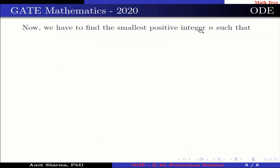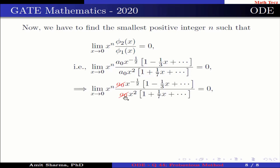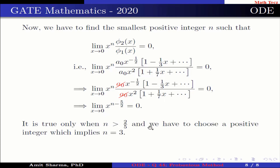Now we find the smallest positive integer n such that lim(x→0) x^n · φ2(x)/φ1(x) = 0. Substituting, this becomes lim(x→0) x^n · [a₀ x^(−1/2)(1 − x/3 + …)] / [a₀ x²(1 + x/7 + …)] = 0. The a₀ cancels, and putting x = 0 gives lim(x→0) x^(n − 5/2) = 0. This is true only when n > 5/2, so the smallest positive integer is n = 3.